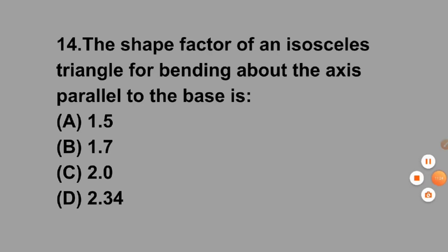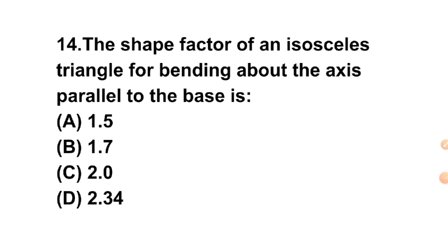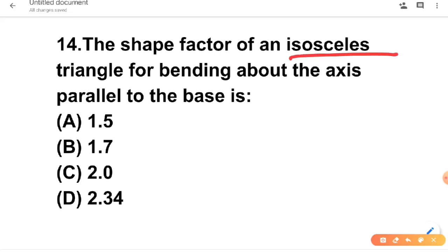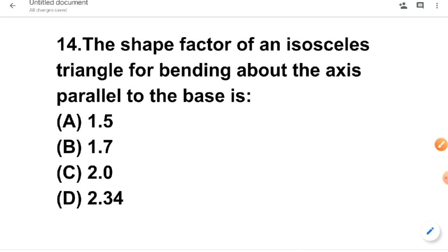Question 14: Shape factor of an isosceles triangle for bending about an axis parallel to the base. We locate the centroid of the triangle and compute the shape factor. The shape factor value for an isosceles triangle bending parallel to the base is 2.34.